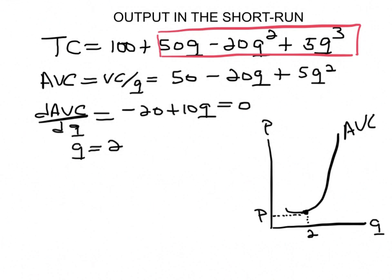So what we do is we take this 2 and we put it back into this equation to find that value of the vertical axis. So that would be 50 minus 20q is 2 plus 5q is 2 squared.